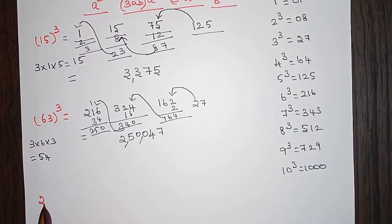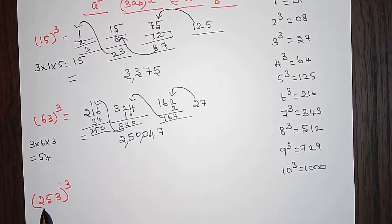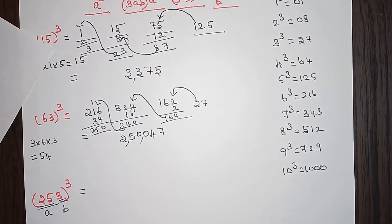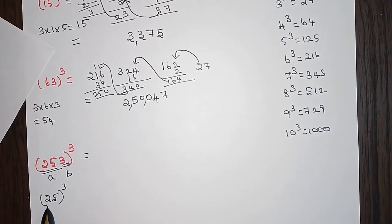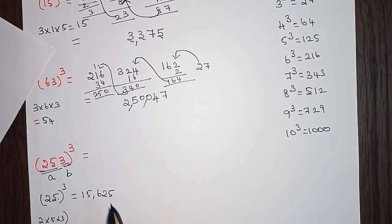Now we'll see how to find the cube of a three digit number, which works in the same way. Here we split the value 253 into a and b: we consider 25 as a and 3 as b. We need to find the cube of 25 first. The cube of 25 can be found the same previous way — taking 2 as a and 5 as b, finding cube of 2, cube of 5, then 3 into 2 into 5, multiplying by 2 and by 5. After working through that, we get 15,625.